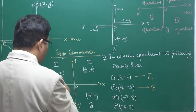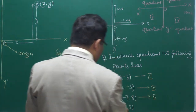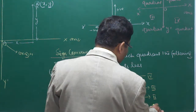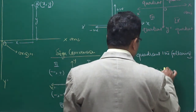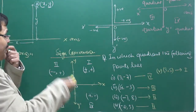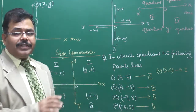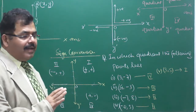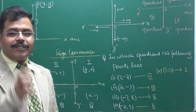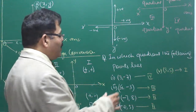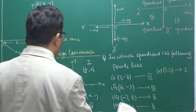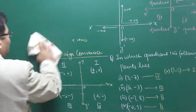For (−7, 8): X is negative, Y is positive — negative, positive lies in the second quadrant. So that point also lies in the second quadrant. And if there is any other point like (3, 5), both are positive, so it lies in the first quadrant.